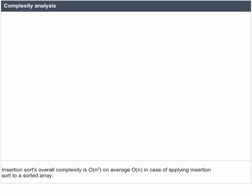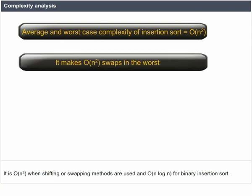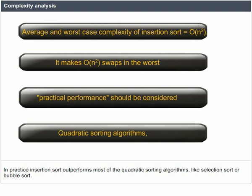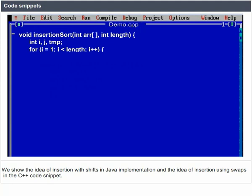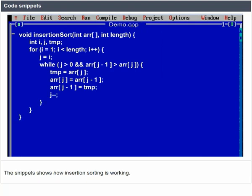Insertion Sort's overall complexity is O(n²) on average, O(n) when applied to a sorted array, O(n²) when shifting or swapping methods are used, and O(n log n) for binary insertion sort. In practice, insertion sort outperforms most quadratic sorting algorithms like Selection Sort or Bubble Sort. Code snippets show the idea of insertion with shifts in Java and insertion using swaps in C++.